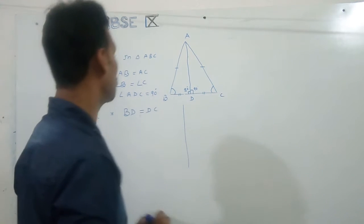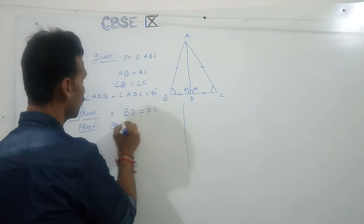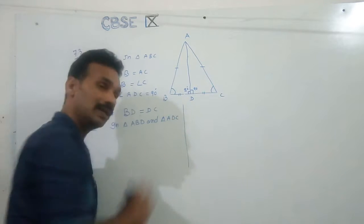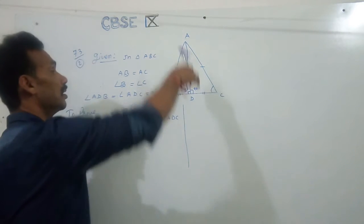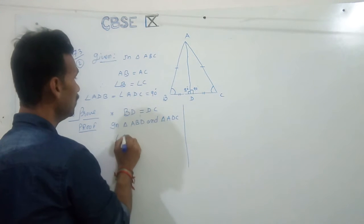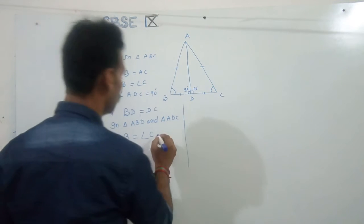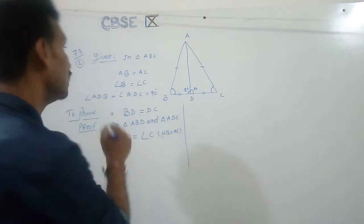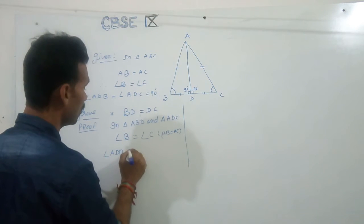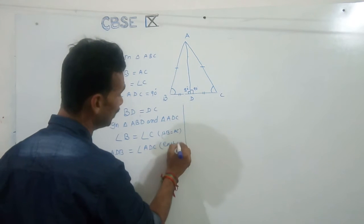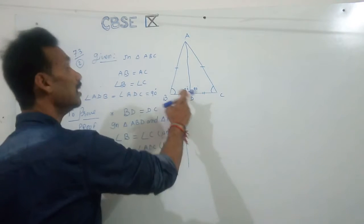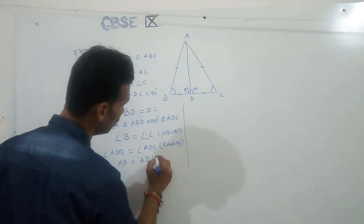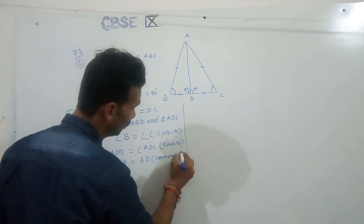First part BD equal to DC I am going to prove, to prove. So now in triangle ABD and triangle ADC, clear, understood. Then two angles are equal. So now in right angle B equal to angle C, okay, given because AB equal to AC. So now in right angle C, then second part. Then second thing angle ADC. Then second thing angle ADB equal to angle ADC, each 90 degree, clear, each 90 degree.